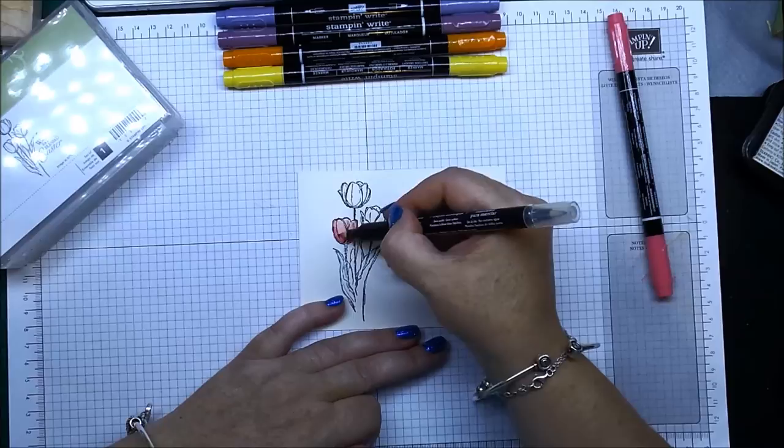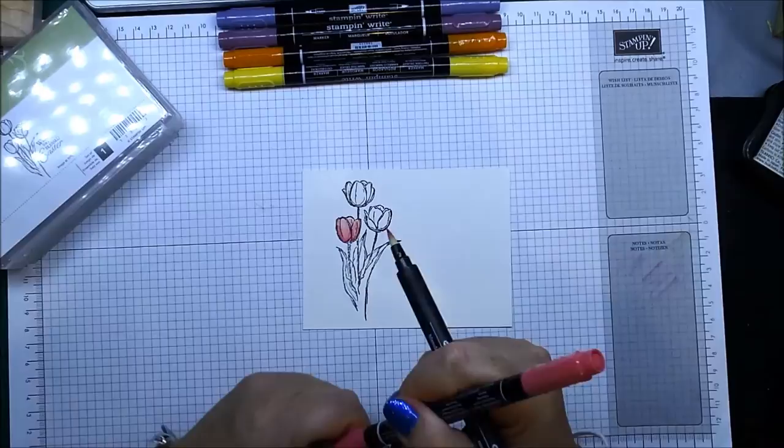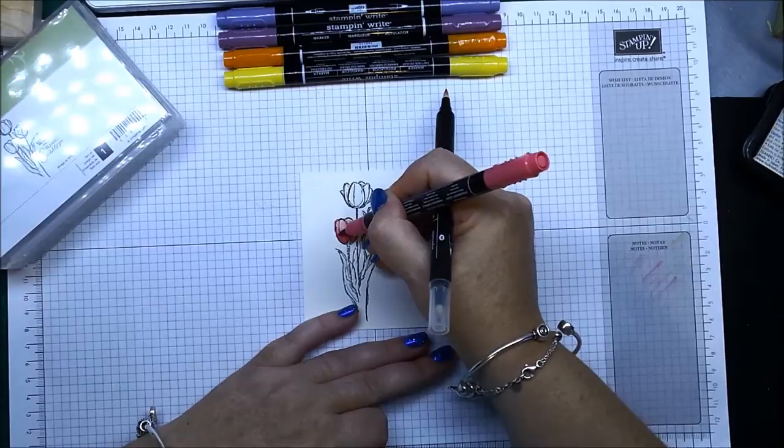Now you can see where I originally put the marker, it's all been blended now. So to make that a little bit darker, all you need to do is just go over it one more time.